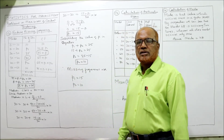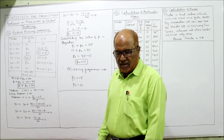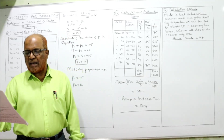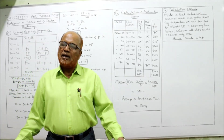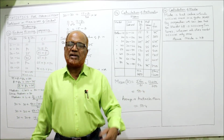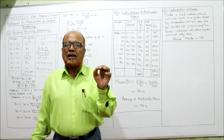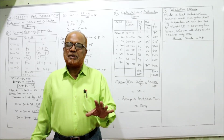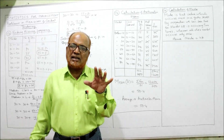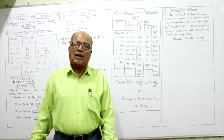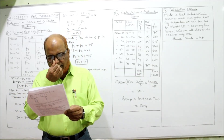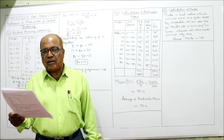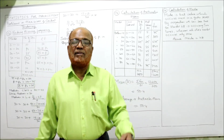Now see problem number 13: calculate the average marks of students from the following data. 'Average' is not specified here, but the most popularly used average is arithmetic mean. When the problem doesn't specify, always go for arithmetic mean. So here we have to find the arithmetic mean.